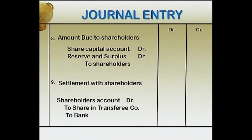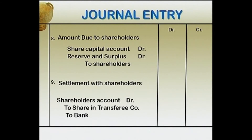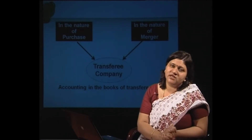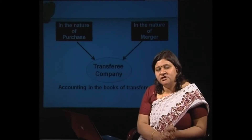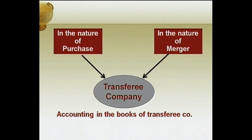The next entry for amount due to shareholders is: Share Capital Account debit, Reserves and Surplus debit, to Shareholders. Finally, the last entry in the books of the transferor is: Shareholders debit, to Bank. Now we discuss the accounting aspect in the books of the transferee company, where the accounting treatment varies depending on the nature of amalgamation — either purchase or merger.